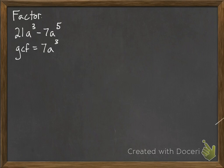Now we want to factor it out. To factor it out, we ask the question, what would I multiply the 7a³ by to get that expression? We can do that by asking the question of dividing.